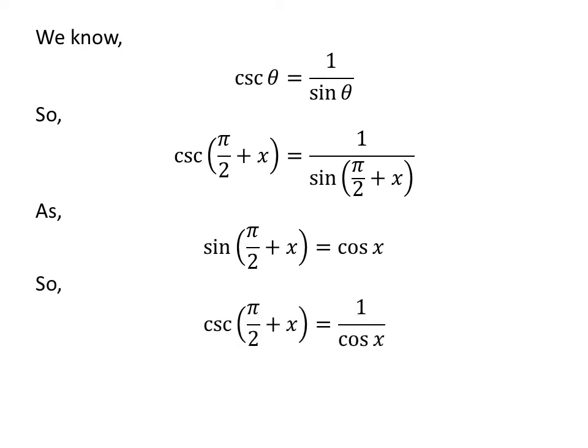Let us apply the above identity in the above expression of cosecant of half of pi plus x. So, cosecant of half of pi plus x is equal to 1 upon cosine of x.